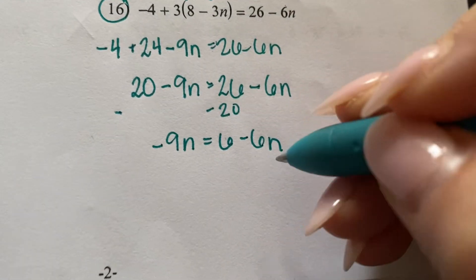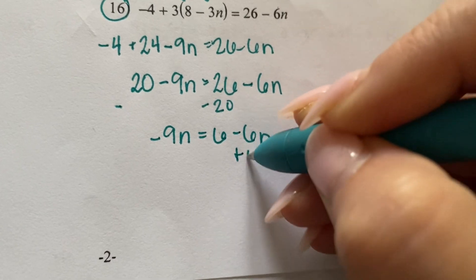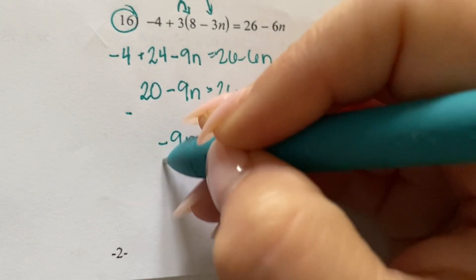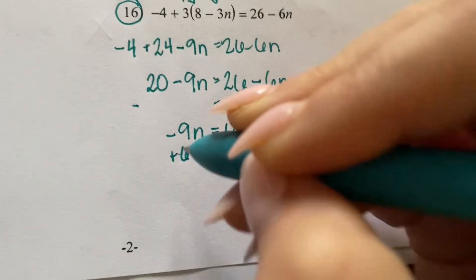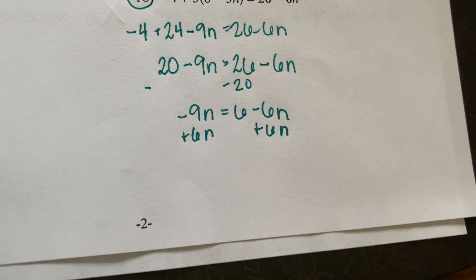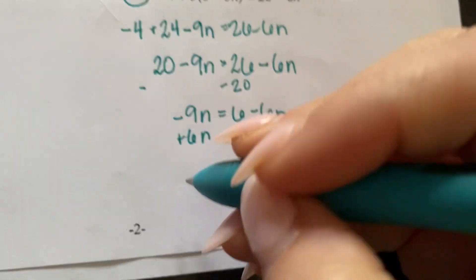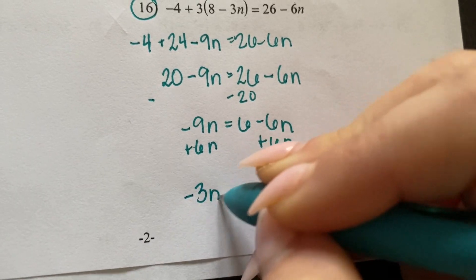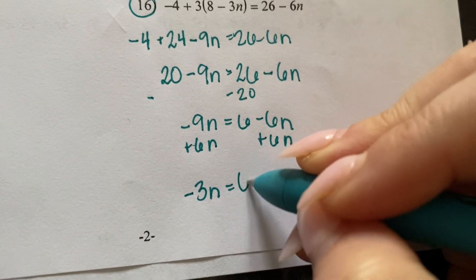I'm going to add 6N. I'm going to add 6N. Add 6N. A negative 9N plus 6N is a negative 3N equals 6.